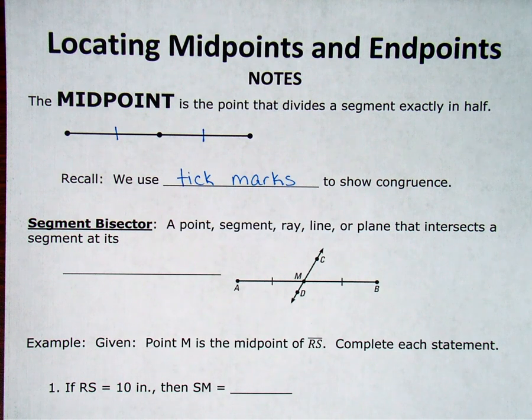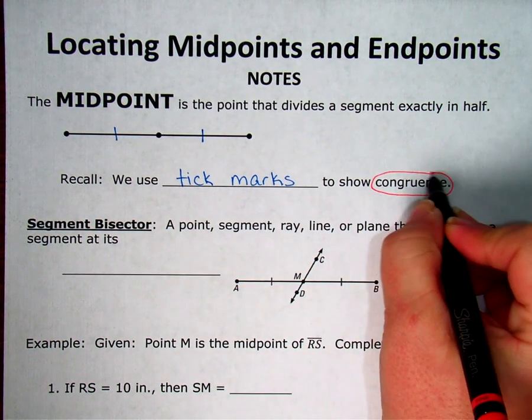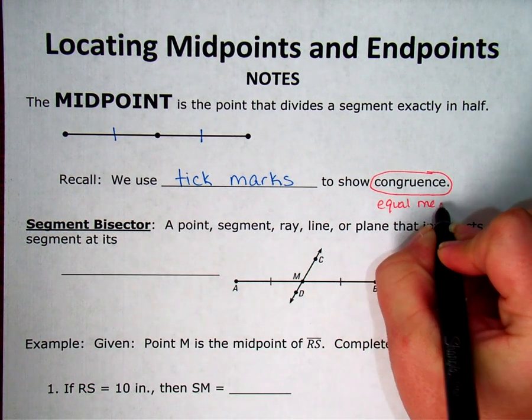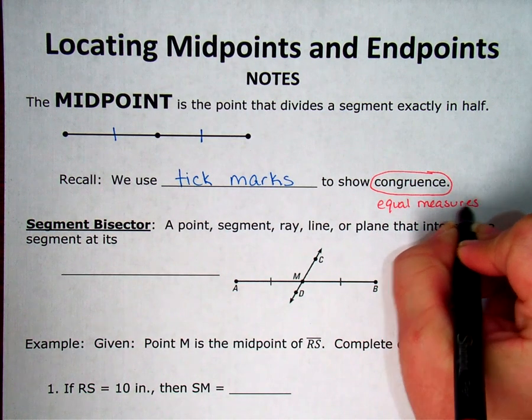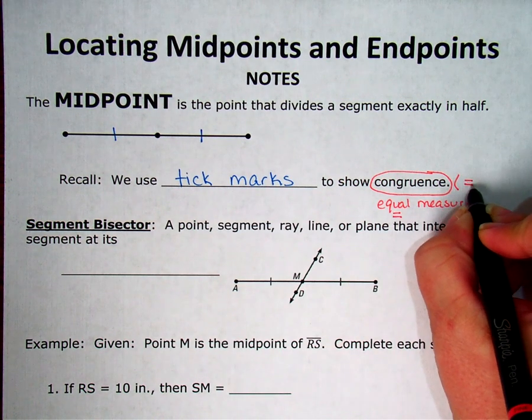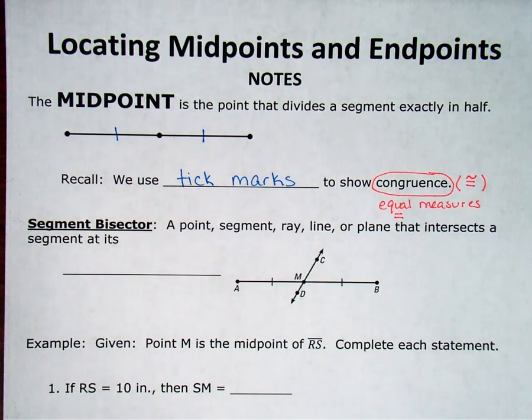In case you've forgotten from last week, congruence just means equal measures. And you know the symbol for equals. The symbol for congruence is just like the equals but with a little squiggle. So that equals with the squiggle on top just means congruent.